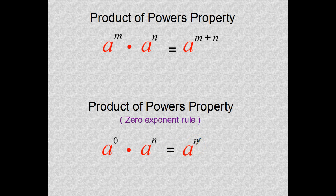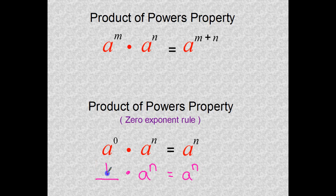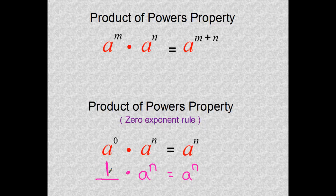So a to the zero multiplied by a to the n would have to equal a to the n. All right, well, if you think about that, what number in the world when you multiply by some number a to the n, what would you get? Well, if you're going to get a to the n, what is that number that you would multiply by to get itself? Well, that's always one. One multiplied by anything is always equal to itself.